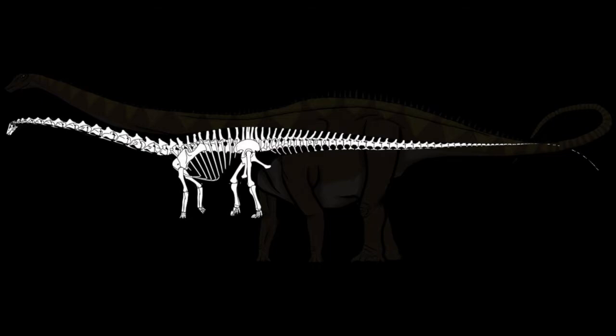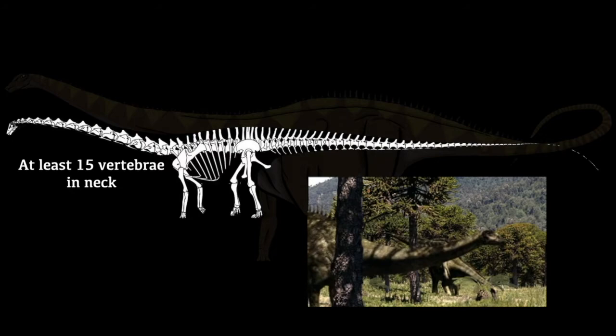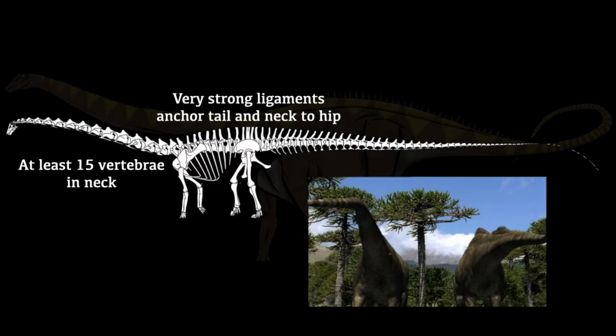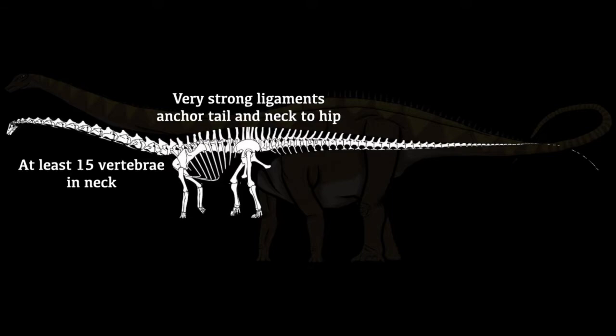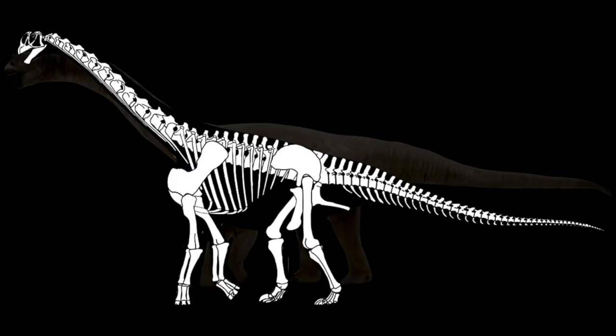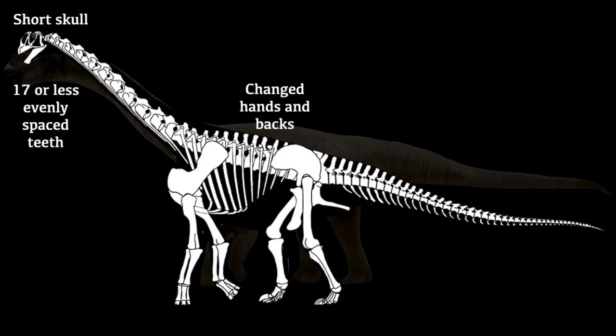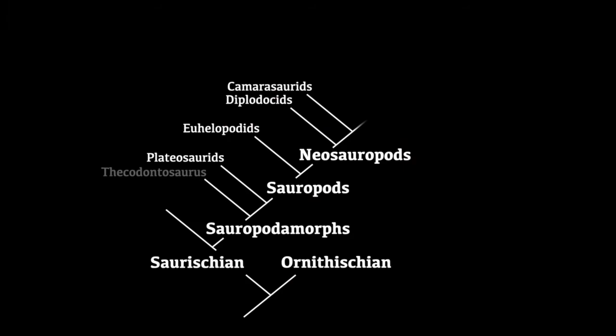Next came the neosauropods, with the first group being the diplodocids, defined by their very long outstretched neck containing at least 15 vertebrae and very strong ligaments over the hip to anchor the neck and tail. This group includes Diplodocus, Apatosaurus, and Supersaurus. The next group were the camarasaurids, which developed differently shaped back vertebrae, walked more on their fingers than earlier groups, and had short skulls with 17 or fewer evenly spaced teeth. This group includes Camarasaurus and Lourinhasaurus.